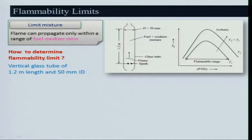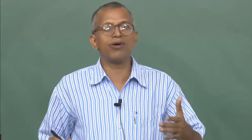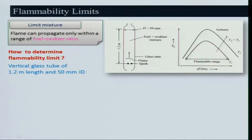There is both a lean flammability limit and a rich flammability limit — beyond either, there is no tangible burning velocity and the flame does not move. The flammability range becomes broader as temperature increases, because burning velocity depends on temperature and S_L increases with temperature.